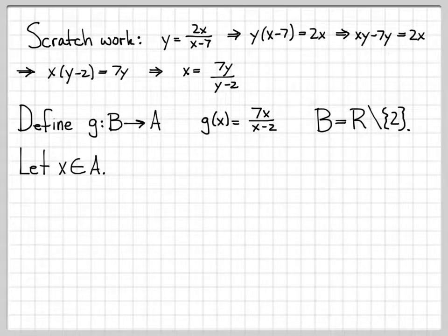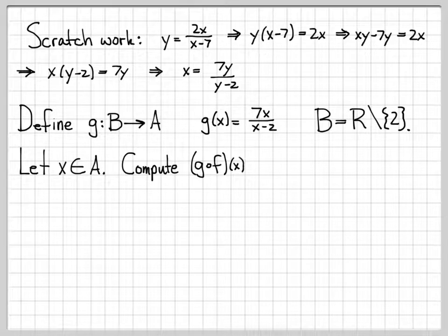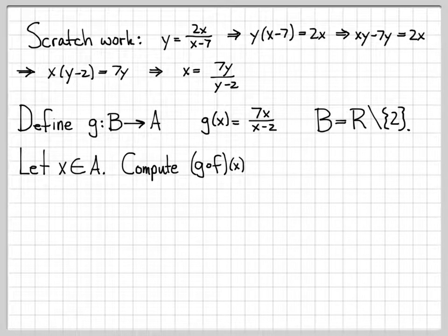Let's do our computation. Choose any x in A and compute g composed of f. Recall from the previous page, this is one of the properties we need to verify: g composed of f needs to equal x — that is, the identity function — and f composed of g also needs to equal x, the identity function. Let's go ahead and compute this.